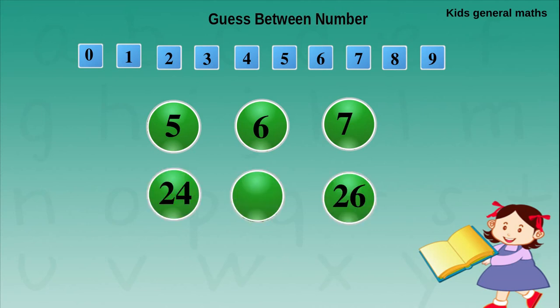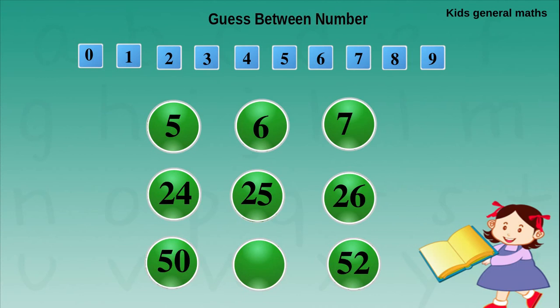Next they are given 24 and 26. What will be the middle number? For 2-digit numbers we write the first digit as it is — that is 2. For the next digit, that is 4, we find the after number. After 4 is 5, so after 24 is 25. So 25 is between 24 and 26. Next they are given 50 and 52. The first digit, 5, is written as it is. For 0, the after number is 1. So after 50 is 51, and 51 is the middle number between 50 and 52.